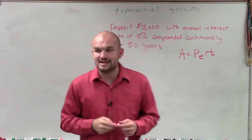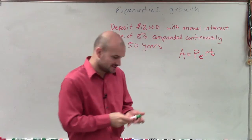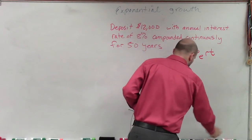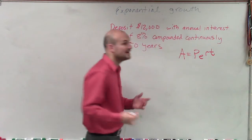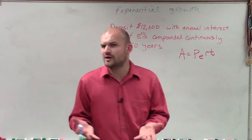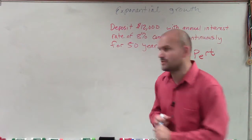A equals P times E raised to the R times T. The next thing we need to do, by applying this formula, is understand what all of those letters represent.